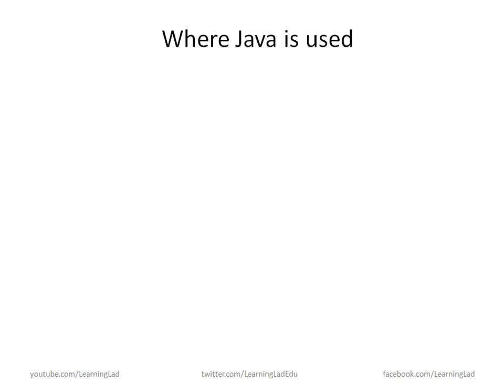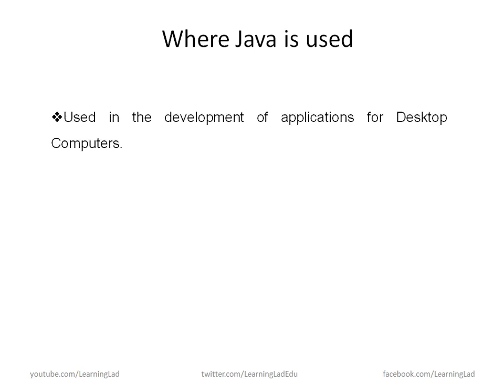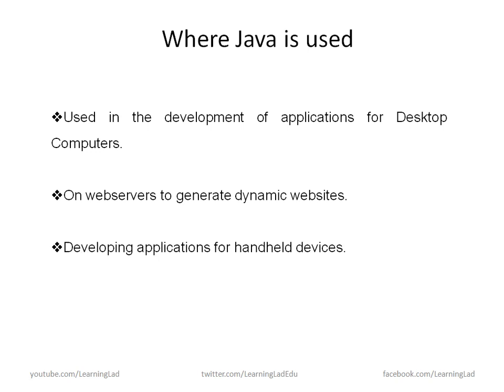The last thing we are going to see in this tutorial is where Java can be used. You can use Java to develop applications for desktop computers. You can also use Java to generate dynamic websites using JSP, which is a part of Java, and dynamic websites are becoming more popular day by day. You can also use Java to develop applications for handheld devices — for example, Android is an operating system available on smartphones, and you can develop apps for Android using the Java programming language.